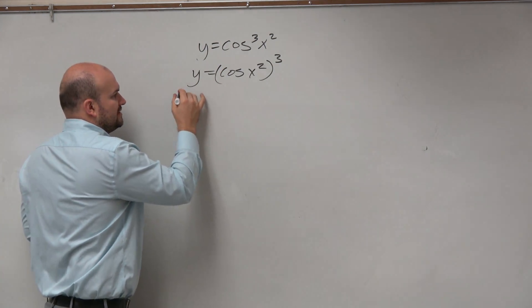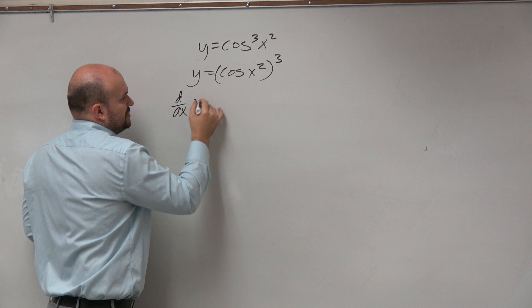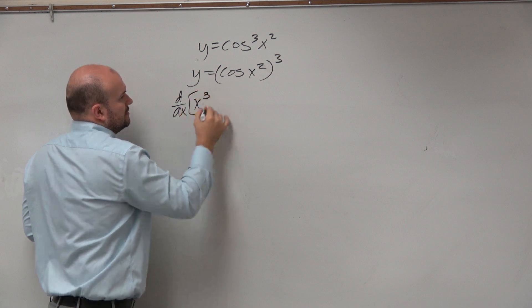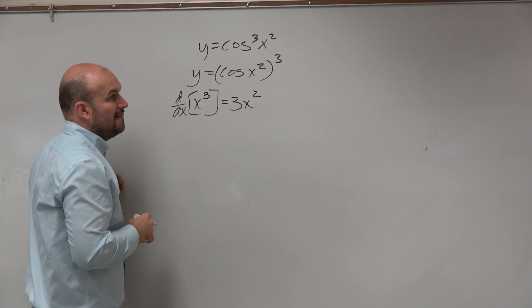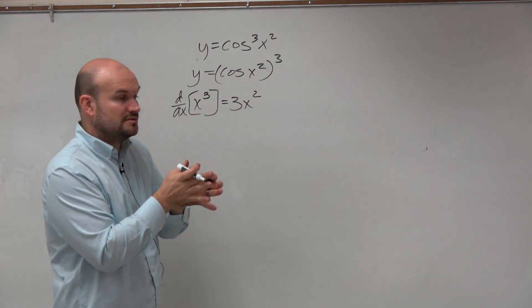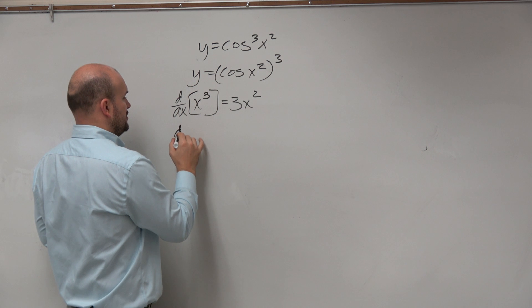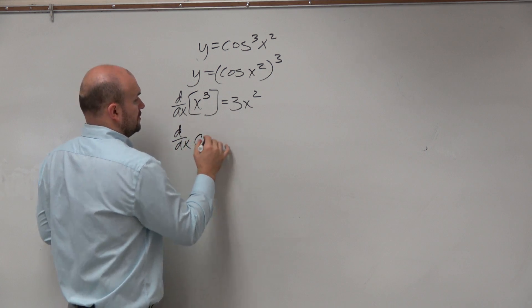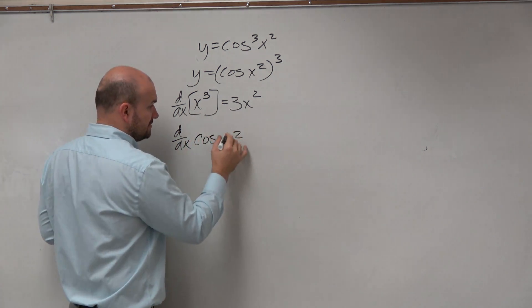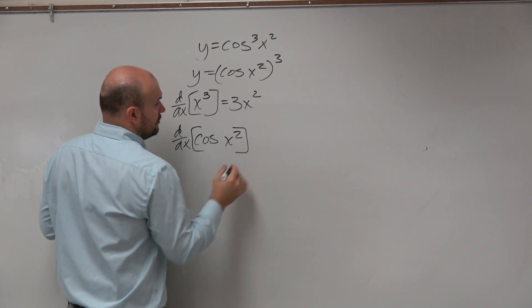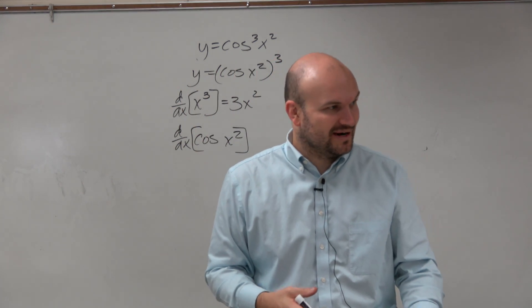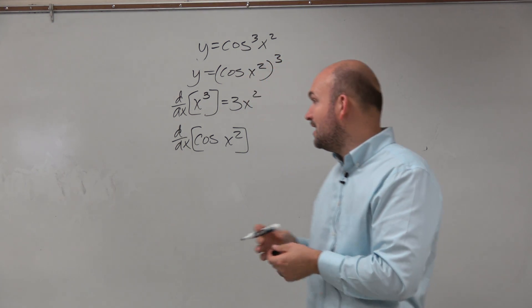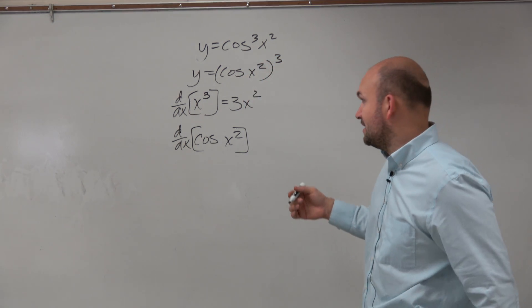So let's go with d over dx of x cubed, which we know is 3x squared, right? And then let's do the inner child, which is going to be d over dx of cosine of x squared, which we know there, we have to do chain rule again, right?